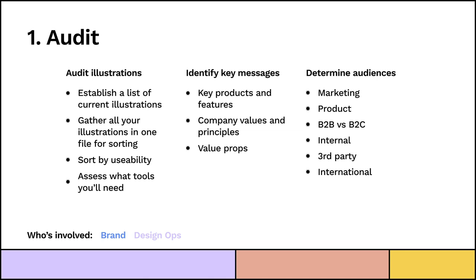After auditing everything, identify key messages. Once you want to start building that library, it can feel difficult — where do I start, what things should I illustrate? I would start by examining what are your key products and features. For instance, when I came to OpenTable I realized we don't have an illustration that symbolizes the app — and we should probably have one for that, it's what makes our money. It's important to have those things illustrated because folks in marketing and product are going to need them time and time again. Next, company values and principles — it's great to have illustrations of those, and your internal teams will be super appreciative. And then value props, which I'd put third on my list.